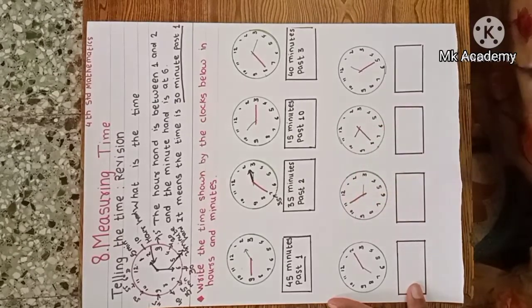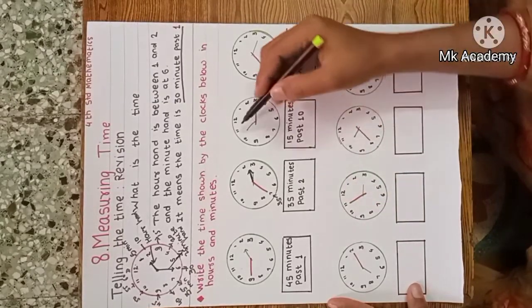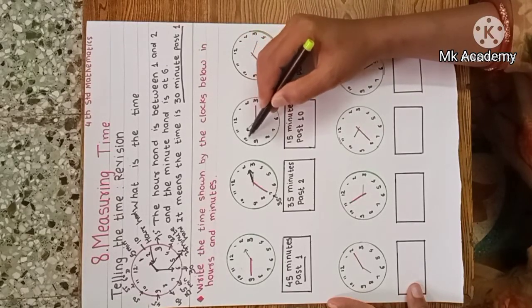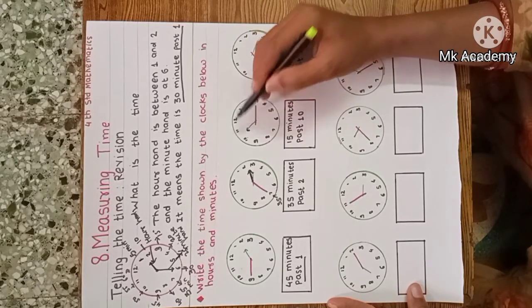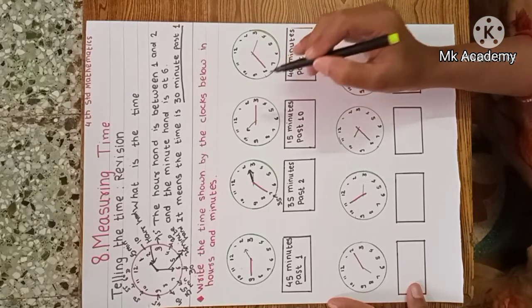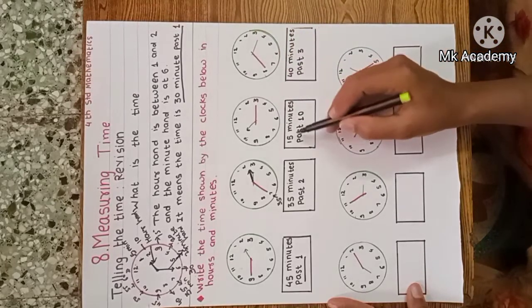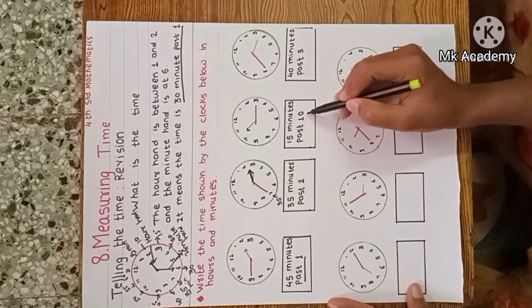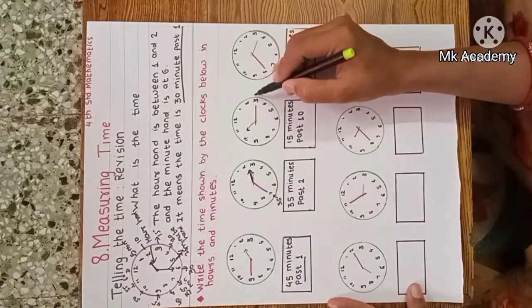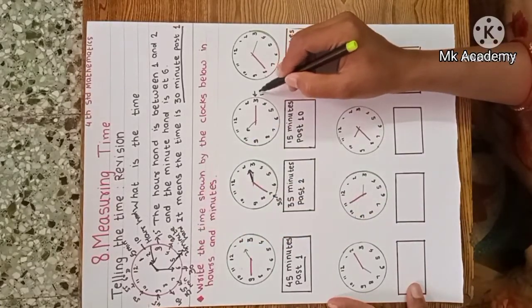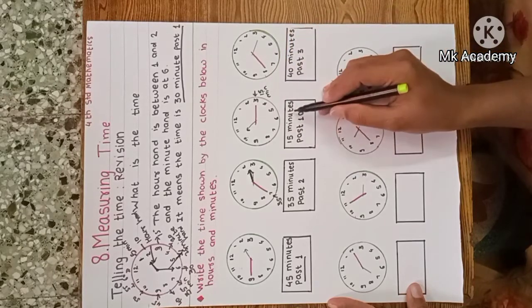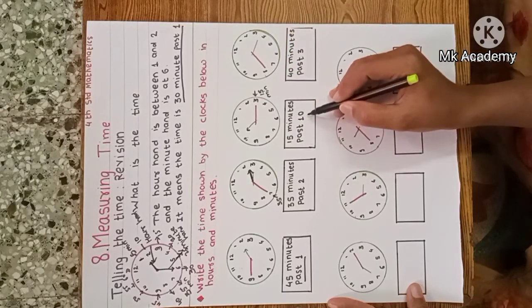Third clock: the hour hand is between 10 and 11, and the minute hand is on three. At three there are 15 minutes, therefore the time is 15 minutes past 10.